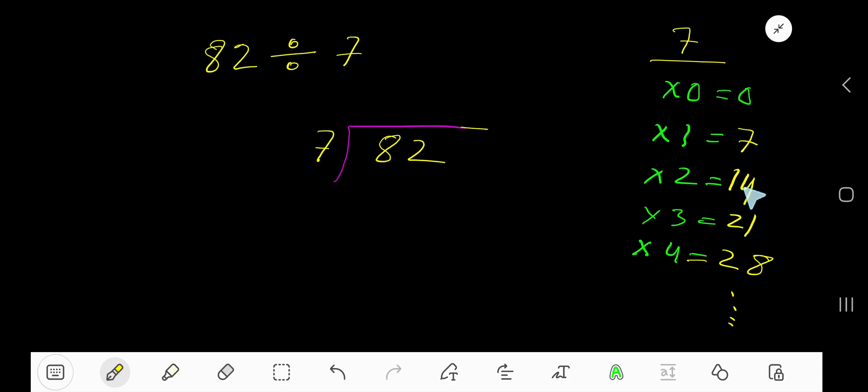So, 7 goes into 8 how many times? 2 times is 14 which is greater, so 1 times. 1 times 7 is 7. Subtract, you are getting 1. Bring down this 2, so 7 goes into 12 how many times? 1 times 7 is 7. If you subtract, then you will get 5.